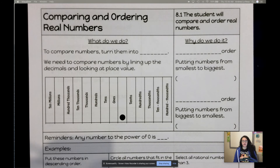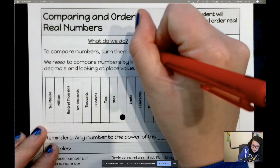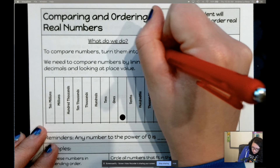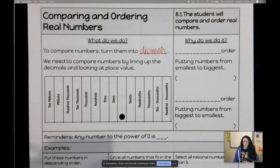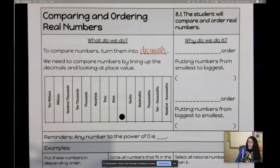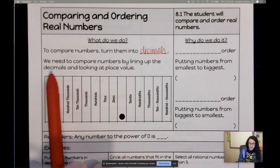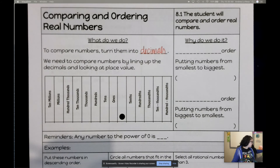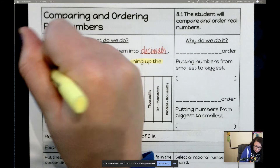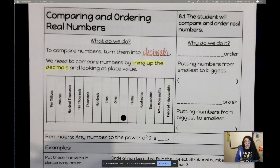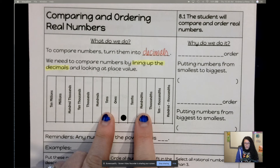The easiest way to compare and order real numbers is to turn them into decimals. If your number is already a decimal, great. If it's a fraction, percent, or square root — that's new this year — turn it into a decimal. Then line them up by place value and compare. It's very important to line up the decimals.